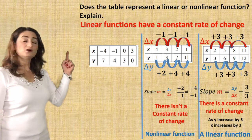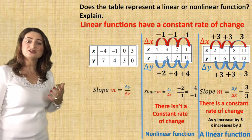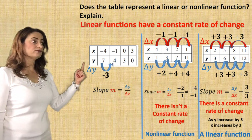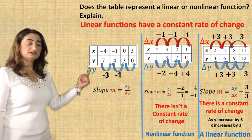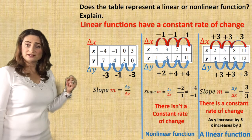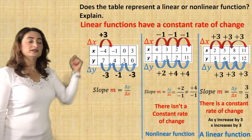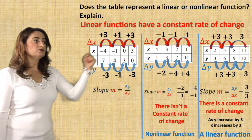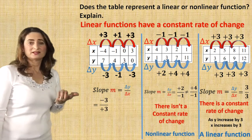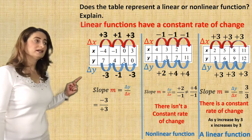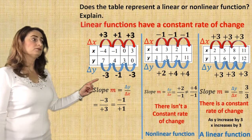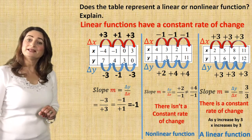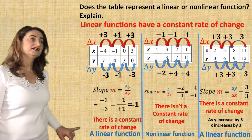Here's the last table example. We find out if it has a constant rate of change — the slope is the change in y divided by the change in x. The change in y: from 7 to 4 is subtracting 3; from 4 to 3 is subtracting 1; from 3 to 0 is subtracting 3. For x: from -4 to -1 is adding 3; from -1 to 0 is adding 1; from 0 to 3 is adding 3. Dividing: -3/3 = -1 and -1/1 = -1. The slope is the same, so it does have a constant rate of change — it is a linear function.